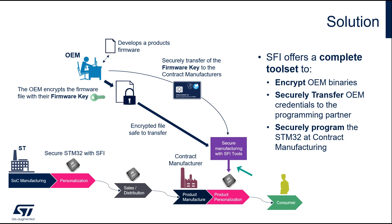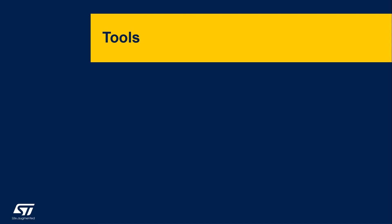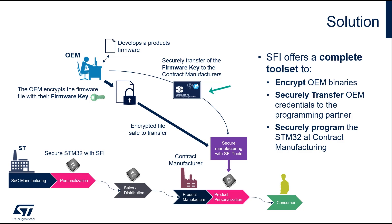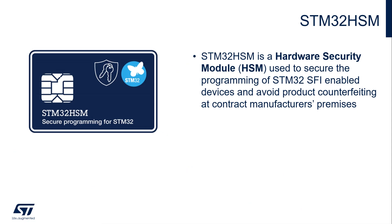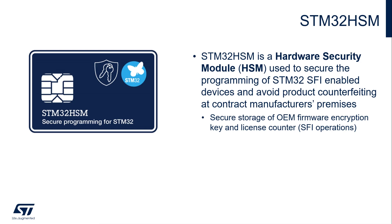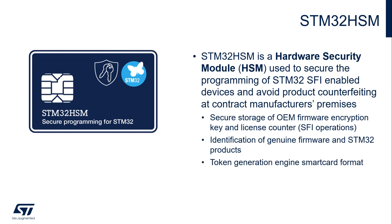Let's now review the list of tools that are part of the SFI ecosystem. ST introduced the STM32 HSM hardware security module, used to secure the programming of STM32 SFI-enabled devices and avoid product counterfeiting at the contract manufacturer's premises. The OEM key is securely stored in the HSM smart card, which guarantees the same level of protection as a credit card. Main features include secure storage of the OEM firmware encryption key, a license counter for SFI operations, identification of genuine firmware and STM32 products, and token generation in a smart card format.